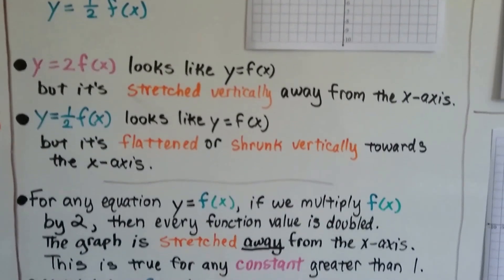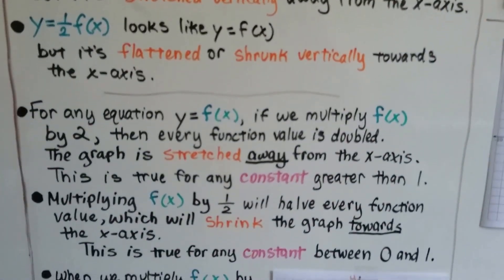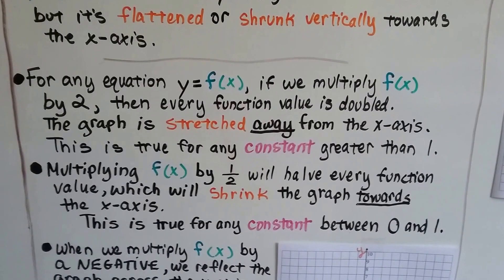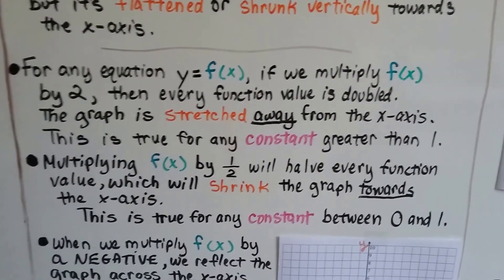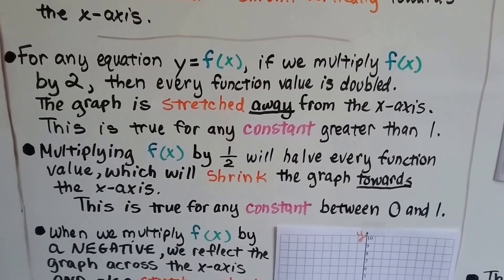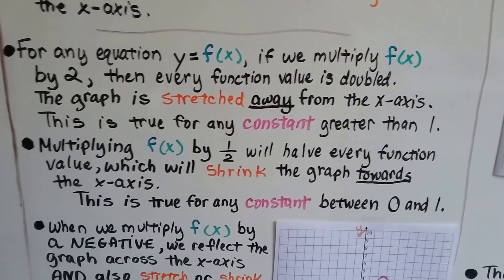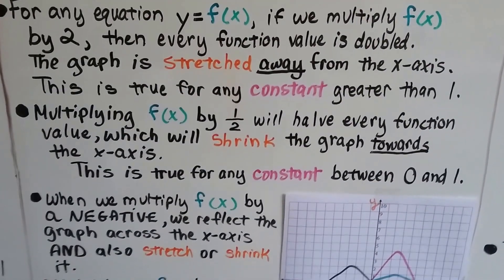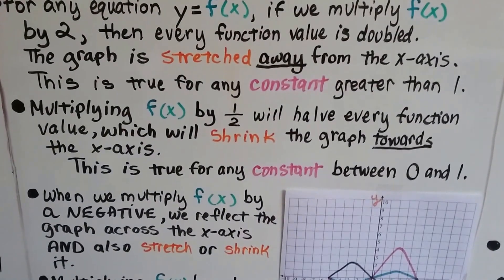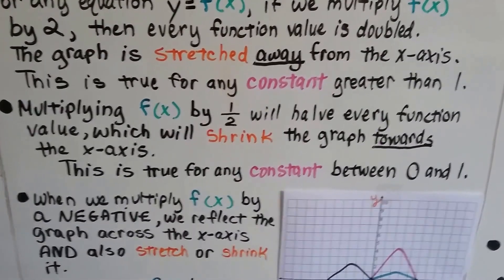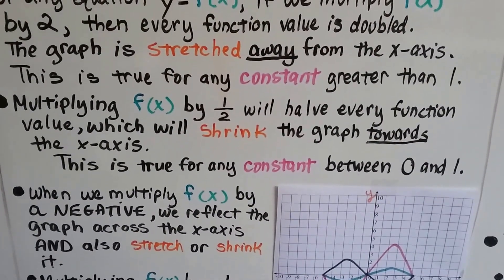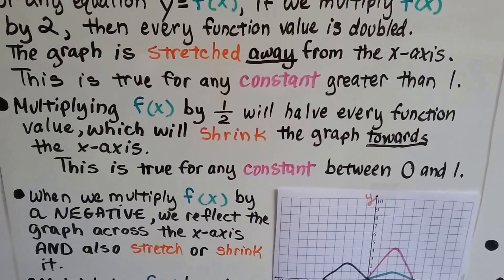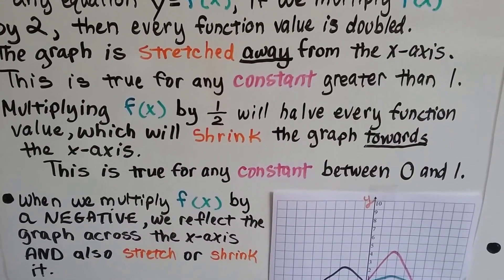For any equation y equals f(x), if we multiply f(x) by 2, then every function value is doubled and the graph is stretched away from the x-axis. That's true for any constant greater than 1. And multiplying f(x) by a half will halve every function value, which shrinks the graph towards the x-axis — and that's true for any constant between 0 and 1.